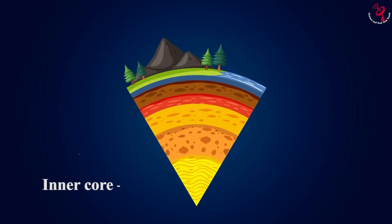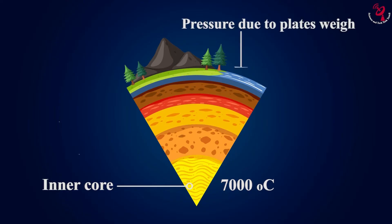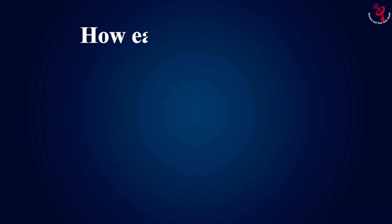Inner core. This is the hottest layer of the four layers at a temperature of 7,000 degrees Celsius. It is also composed of iron and nickel metal. This layer is in a solid state, despite the fact that it is the hottest part of the Earth. This is because the inner core is under tremendous pressure due to the weight of the other layers.